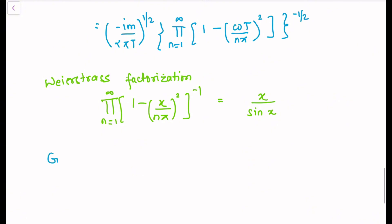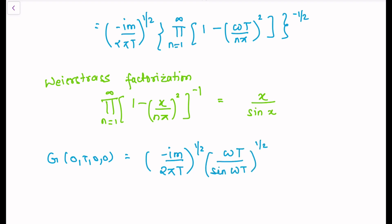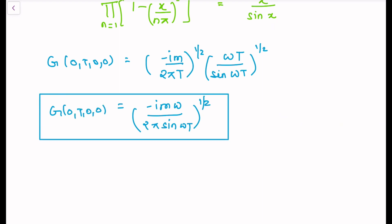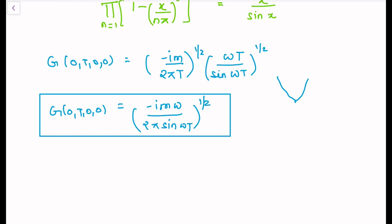In our case, x equals omega T, so the propagator G simplifies to the square root of minus im over 2 pi T times the square root of omega T over sin(omega T). This further simplifies to the square root of minus im omega over 2 pi sin(omega T). This is our final expression for the propagator of the simple harmonic oscillator, given initial conditions that the particle starts at q equals zero and is found again at q equals zero at later time T.